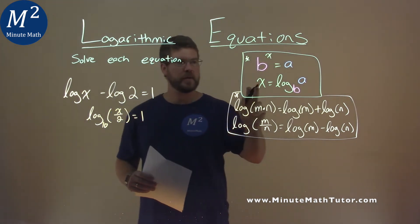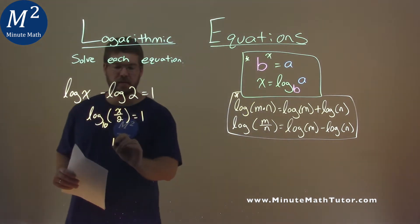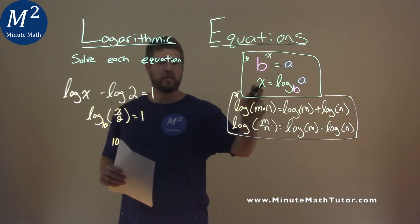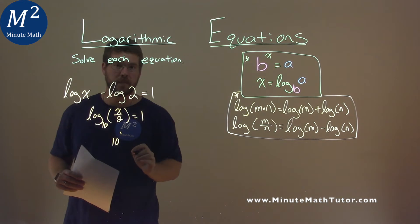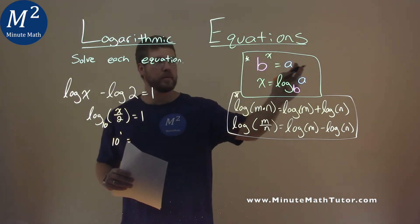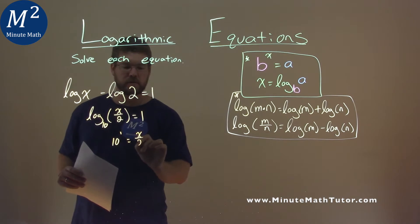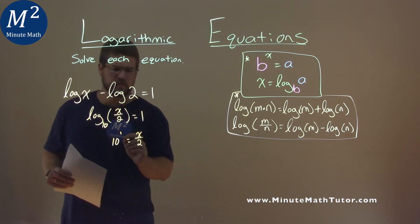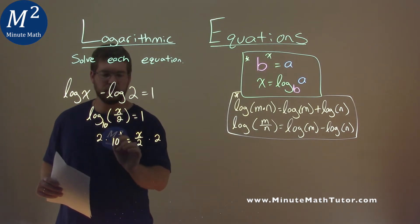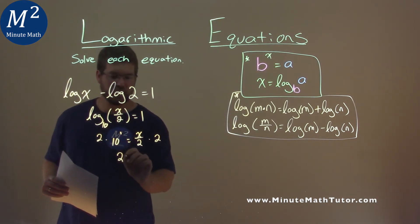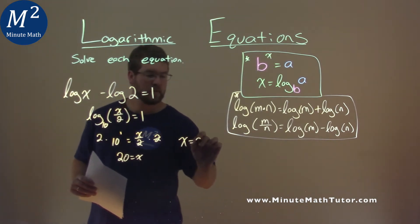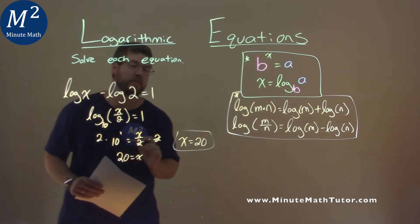We now use our formula here. Our base 10 — our b value — is going to be raised to the power of what it's equal to, that's just a 1, and that's equal to what's inside the logarithm, the a value, which is x over 2. Well, 10 to the first power is 10. We multiply both sides by 2, and 10 times 2 is 20, and that's just equal to our x. So x equals 20 is my final answer.